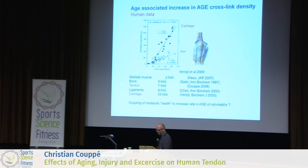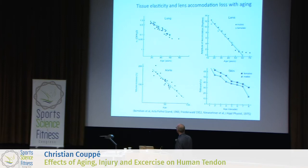It has been proposed that this mechanism may be behind the age-related increase in stiffness or loss of elasticity we observe in tissues such as the lung and aorta.